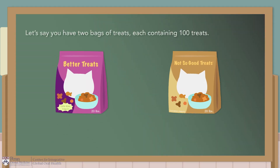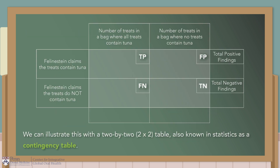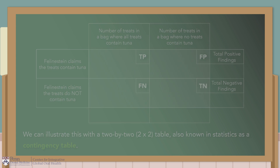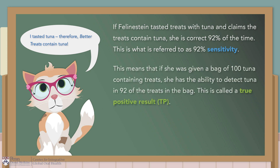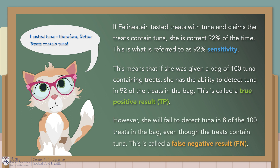So what does this mean, Hera? Let's say you have two bags of treats, each with 100 treats. In one bag, all the treats contain tuna, and in the other bag, no treat contains tuna. We can illustrate this with a 2x2 table, also known in statistics as a contingency table. If Feline Stein tasted treats with tuna and claims the treats contain tuna, she's correct 92% of the time — that is what is referred to as 92% sensitivity. This means that if she was given a bag of 100 tuna-containing treats, she has the ability to detect tuna in 92% of the treats in the bag, which is also called a true positive result. However, she will fail to detect tuna in 8 of the 100 treats in the bag, even though the treats contain tuna.